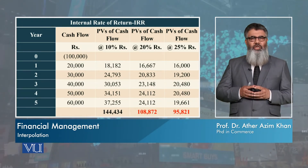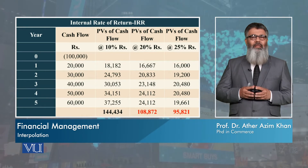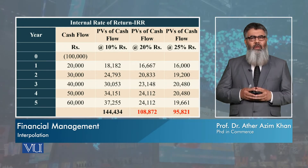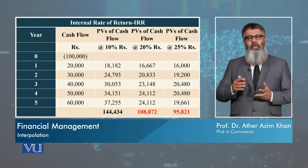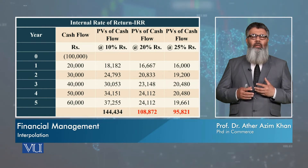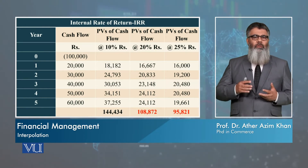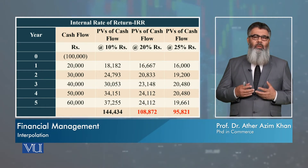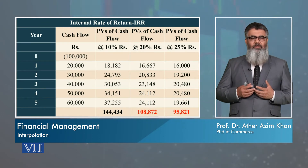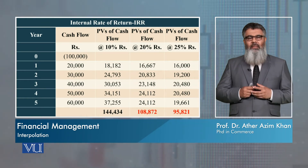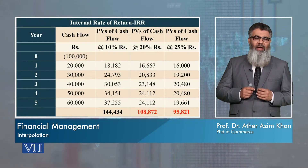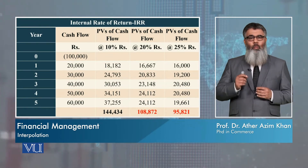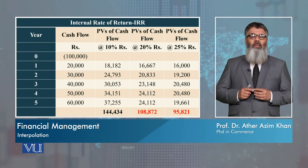This is the same spreadsheet we saw in the last module where we did the calculations of IRR. We started with 10% because the sum of present values was more than the outflow. We moved up to 20% — still it was more — so we moved up to 25%. At 25%, the sum of present values is 95,821, which is less than the outflow of 100,000.